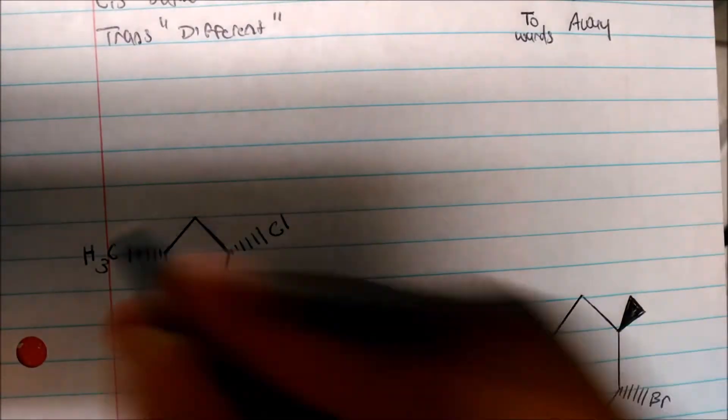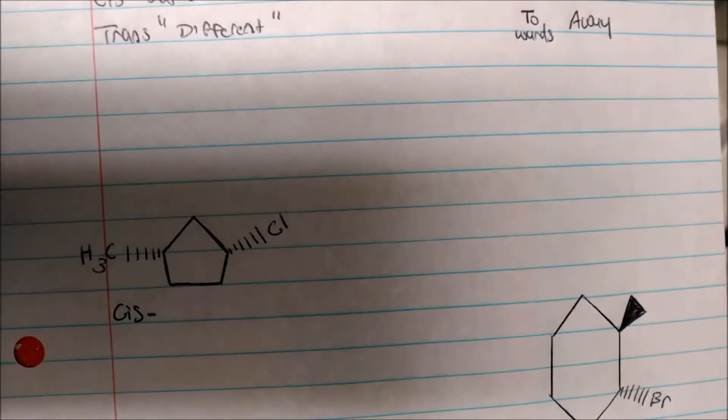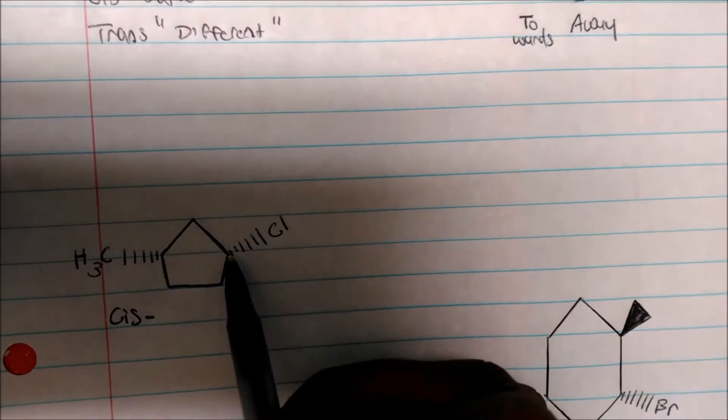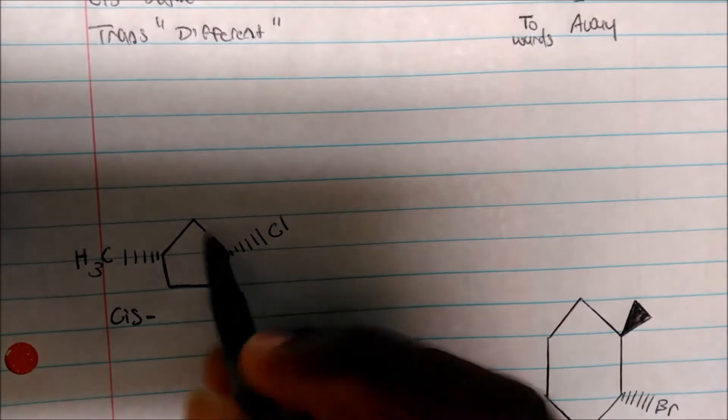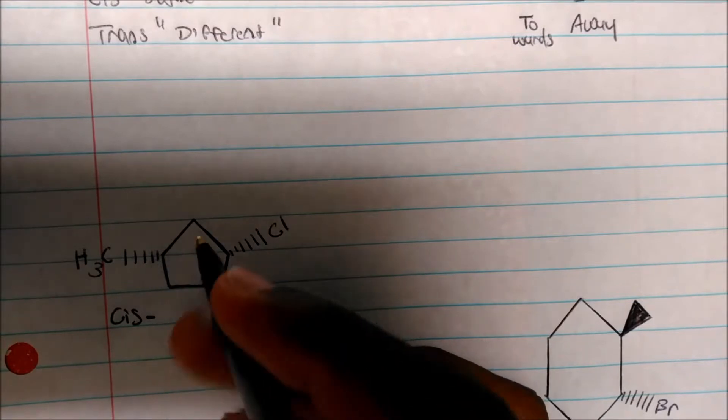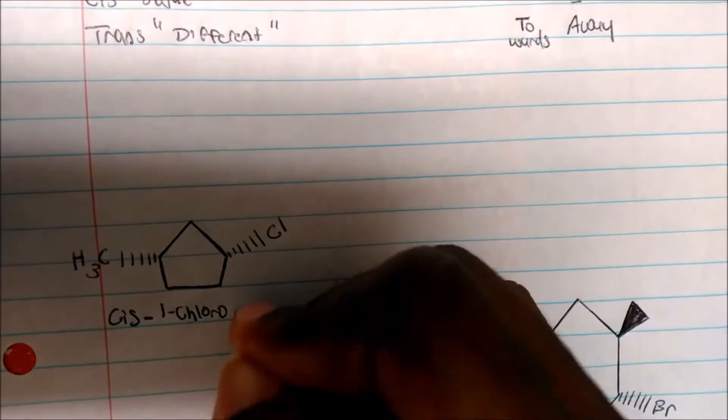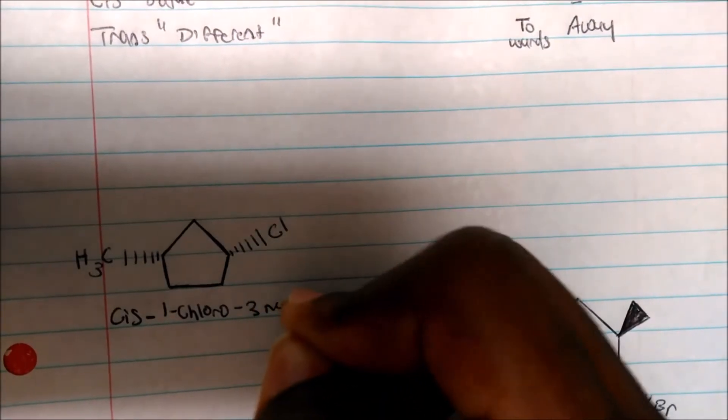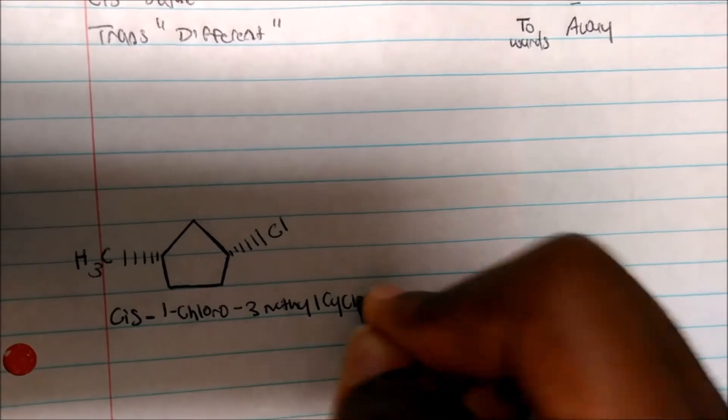So, again, the first thing I'll put is cis, and then we'll have a dash. You're always going to have a dash between your cis and your trans. Again, because methyl is way down in the alphabet, I'm going to start with chlorine. So on carbon 1, I have a chlorine. On carbon 2, 3, I have a methyl. So this is a cis-1-chloro-3-methyl-cyclopentane.